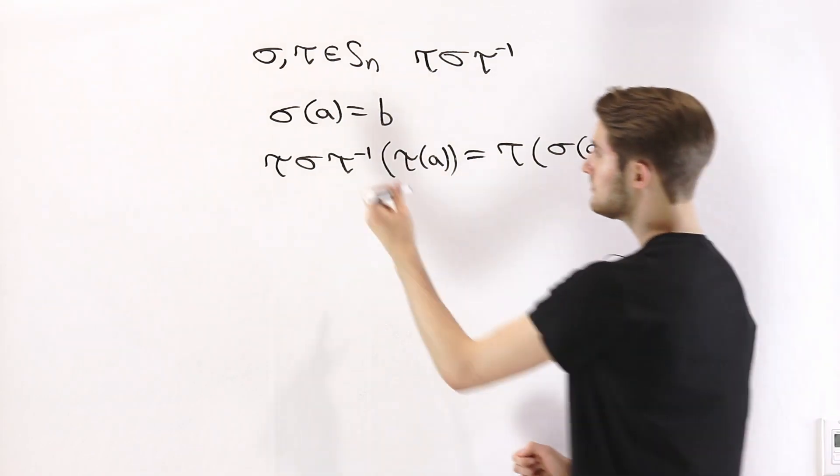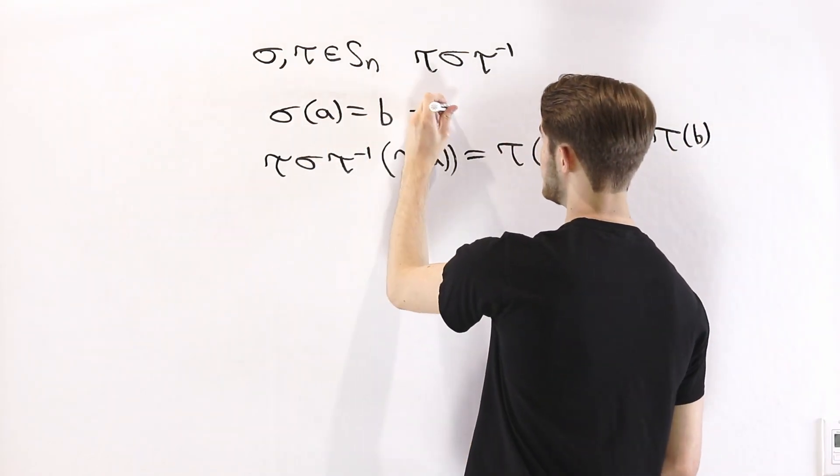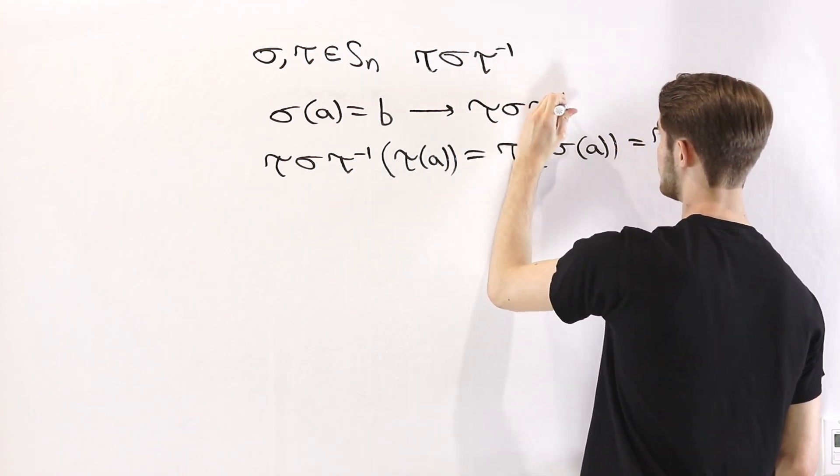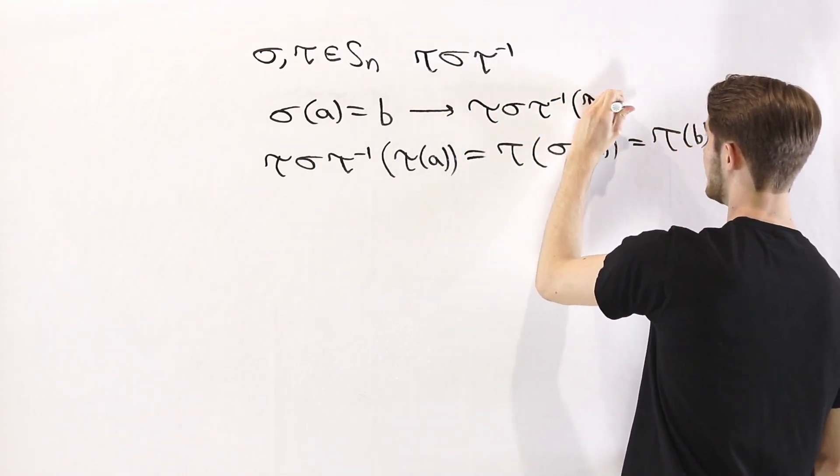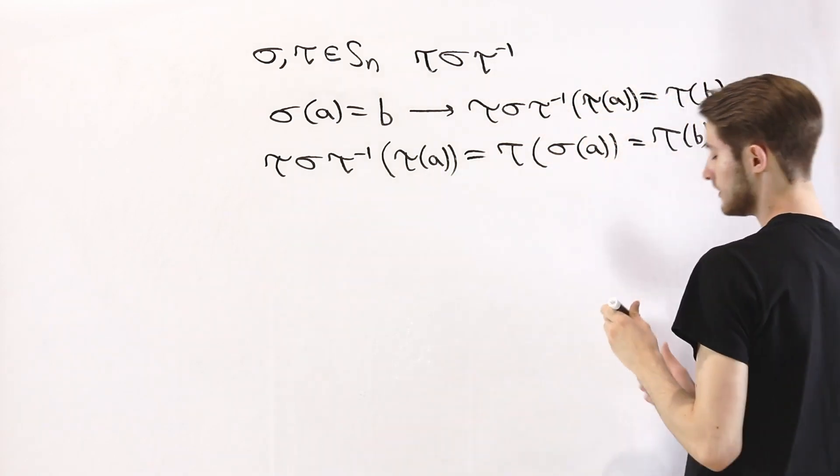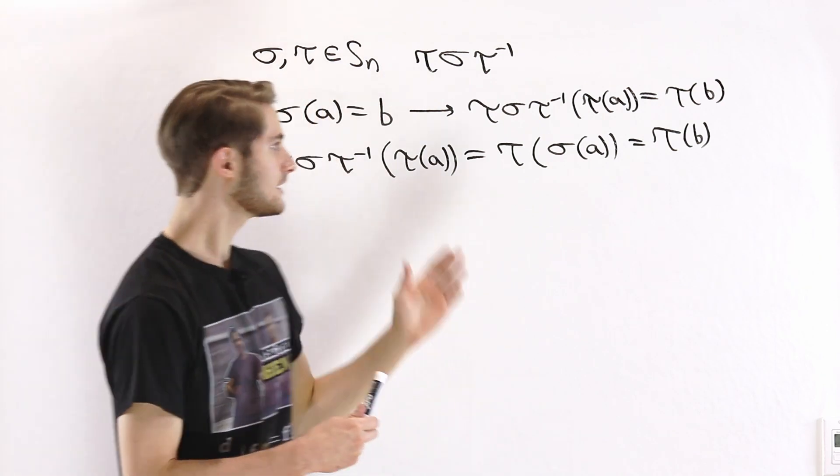In other words, if sigma of A equals B, then that means tau sigma tau inverse of tau A is equal to tau of B. Now, to see exactly what's going on here,